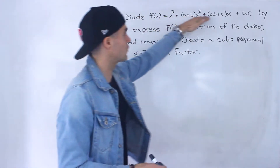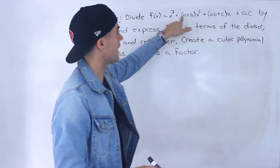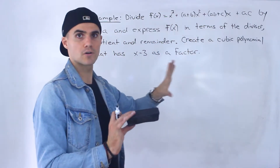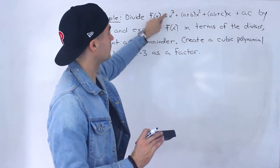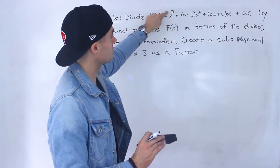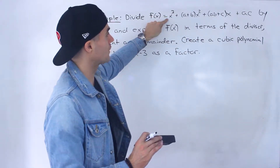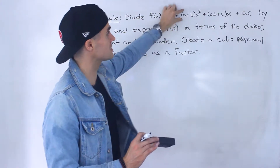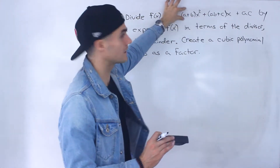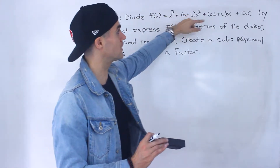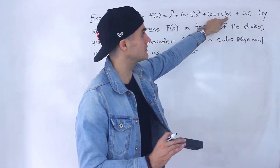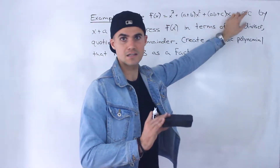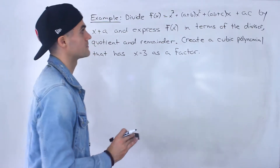Now, I want to talk about this format. The a, b, and c — those are just some kind of numbers. So x to the power of 3 has a coefficient of 1 in front. The coefficient of x squared is (a plus b) — just think about that bracket as just a number in front of x squared. And (ab plus c) is a number in front of the x. And then ac is just a constant at the end.